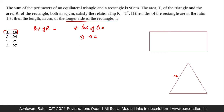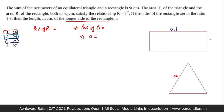Option 2: longer side = 24, shorter side = 8. Perimeter = 64, so triangle perimeter = 26. But 26 is not a multiple of 3, so the side would be a fraction — the area of the triangle would not be an integer, so R cannot equal T². Option 2 is discarded. Option 3: longer side = 21, shorter side = 7. Perimeter = 56, triangle perimeter = 34. Again, 34 is not a multiple of 3, so option 3 is also discarded.